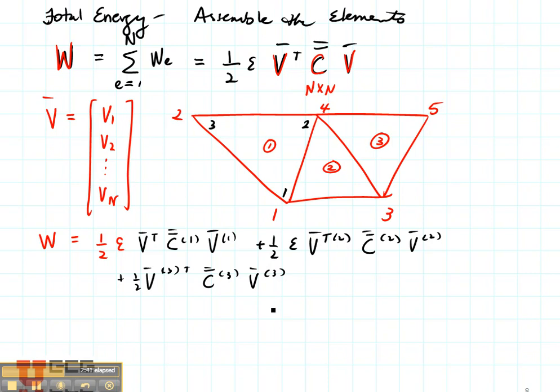So let's consider elements one, two, and three. And what are their local nodes? Their local nodes are one, two, three. Let's define them here for element number two: one, two, and three. And then again here, one, two, and three.